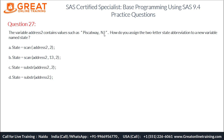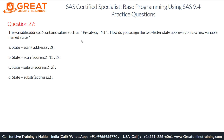Let's check the other options. Option B is: state = scan(address2, 13, 2). The SCAN function extracts words, not characters. We only have two words — 'Piscataway' and 'NJ' — but this option asks for the 13th word, which doesn't exist. So this option is absolutely wrong.